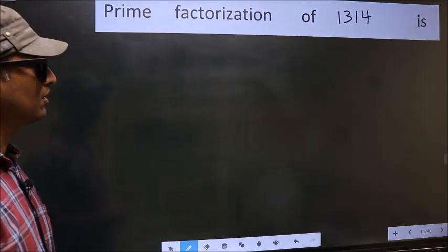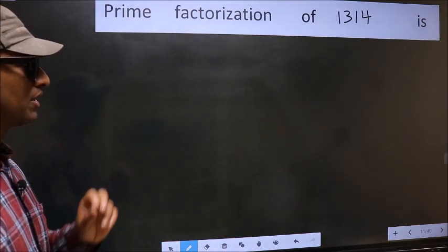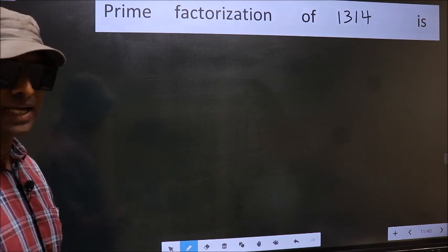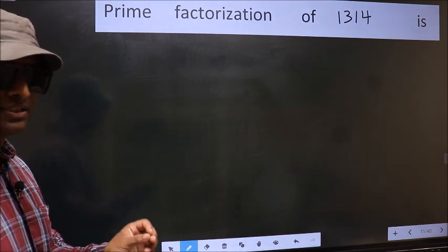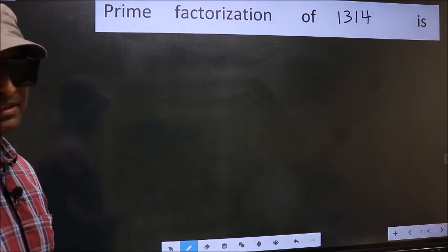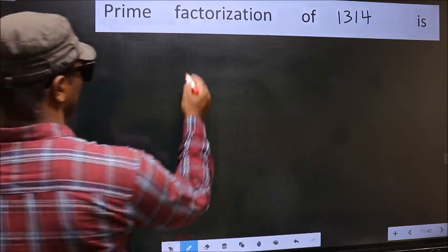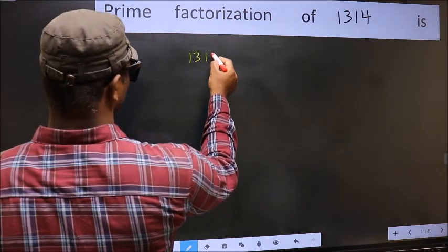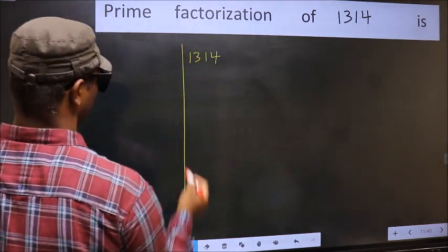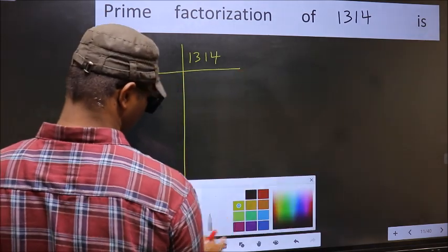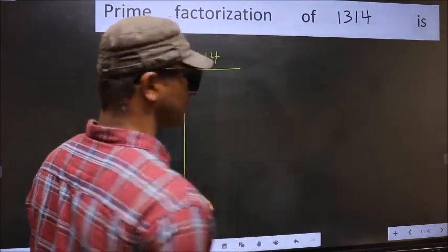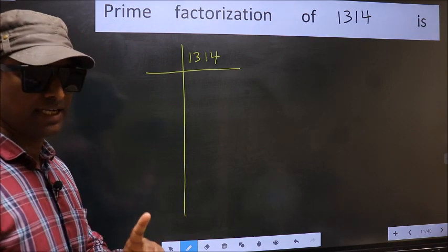Prime factorization of 1314. To do prime factorization, first we should frame it in this way. Write 1314. This is your step 1.